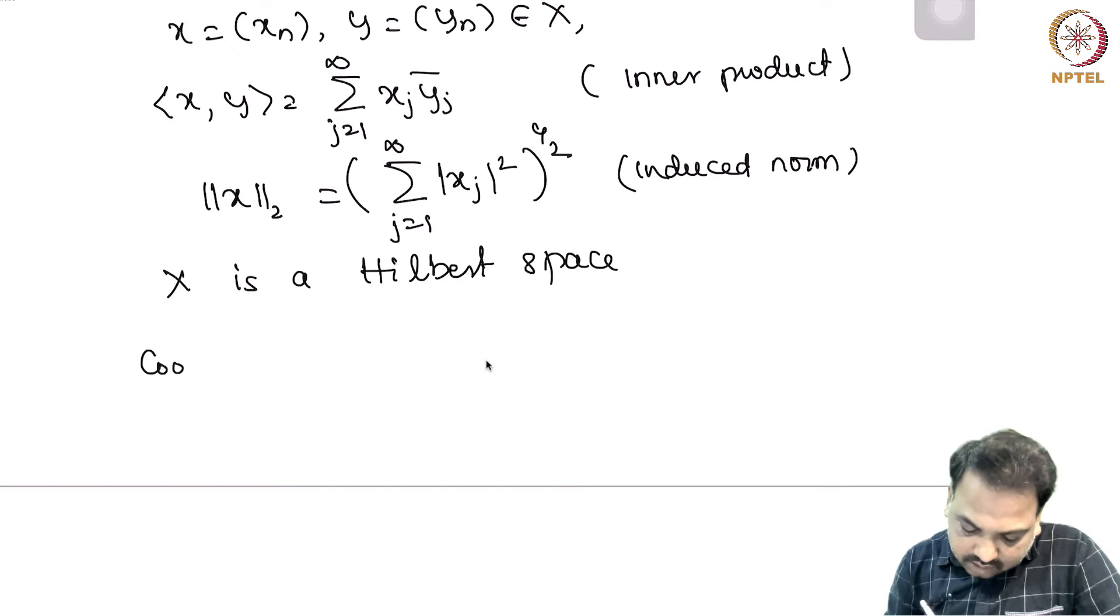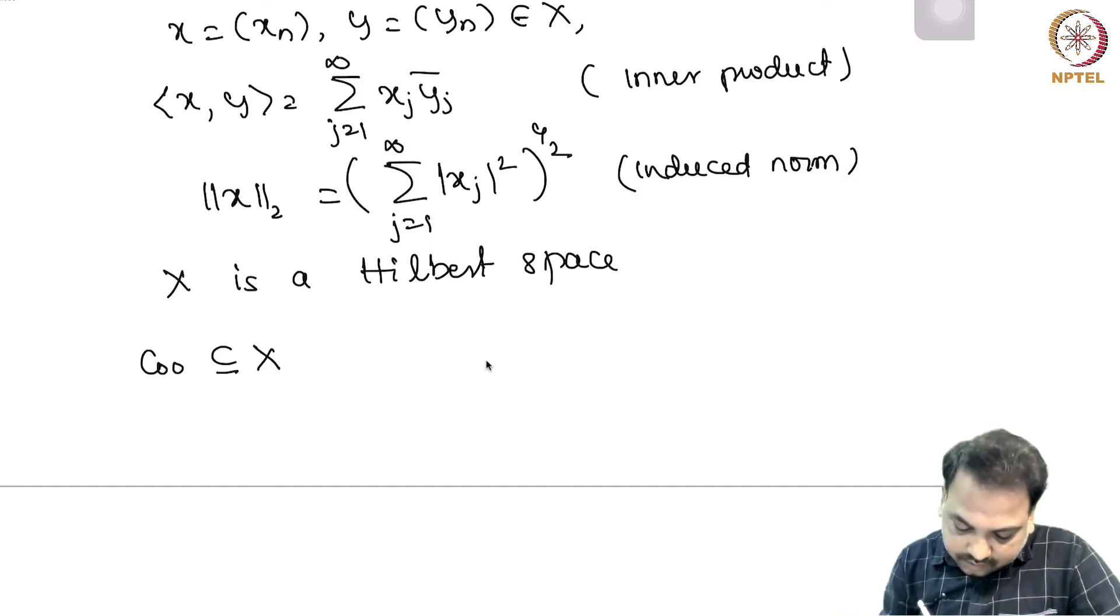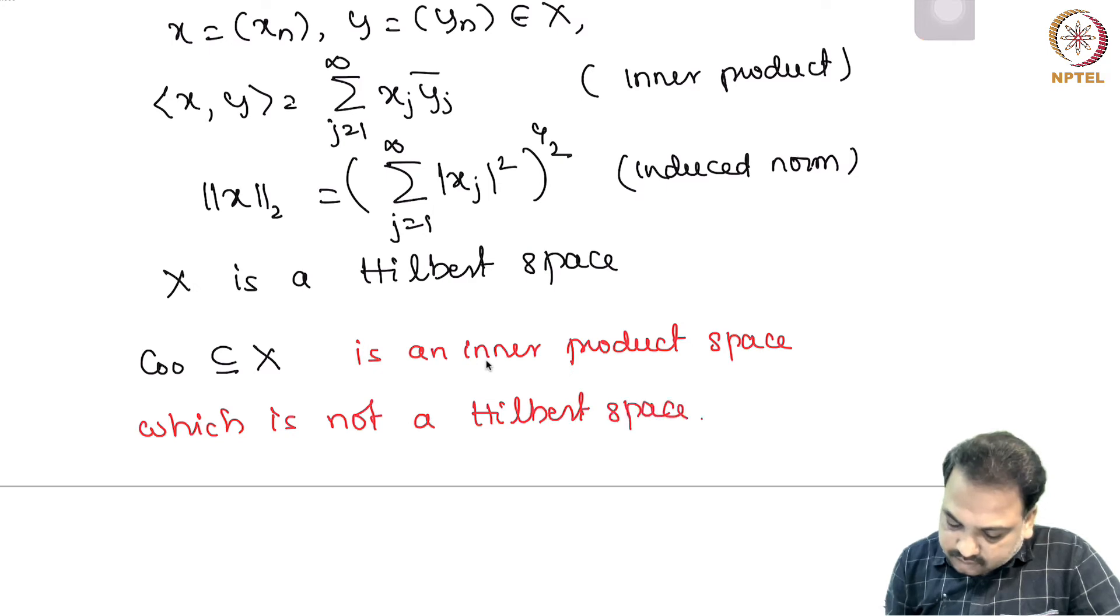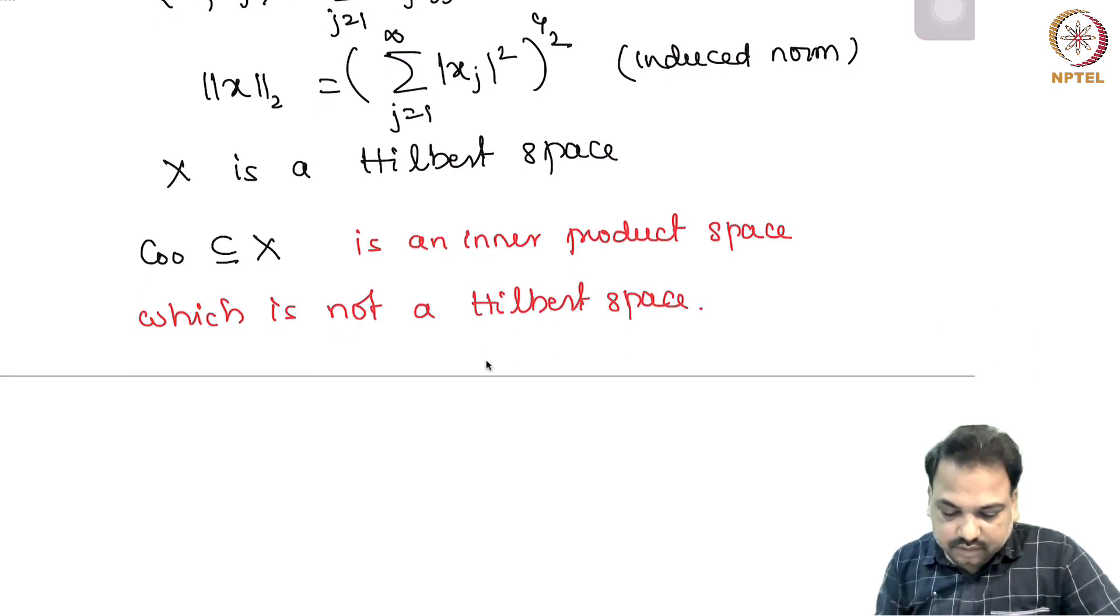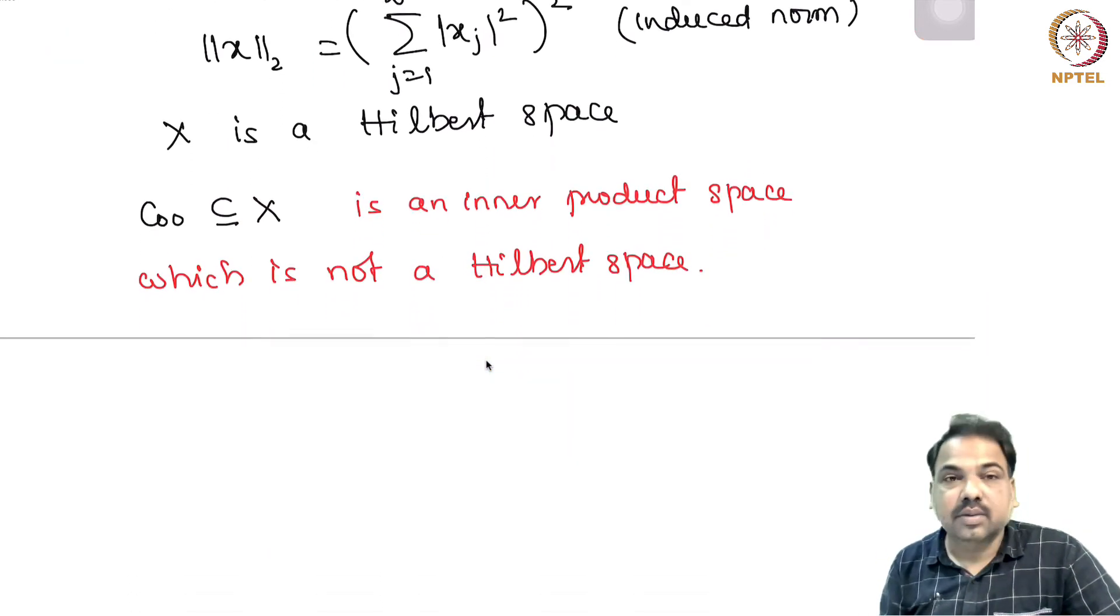Here if you look at c_00, which is a subset of X, we can show that c_00 is incomplete. Hence, we can say that this is not a Hilbert space. So this is an inner product space which is not a Hilbert space. On c_00, we have the same inner product as l^2(N). So with respect to that, this is not a Hilbert space.